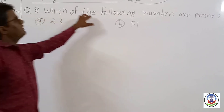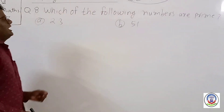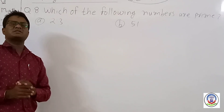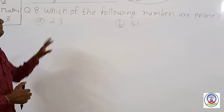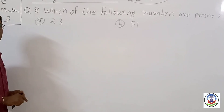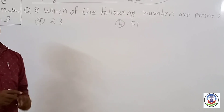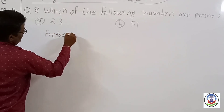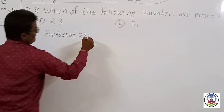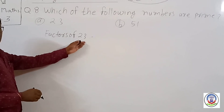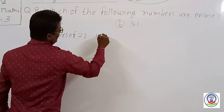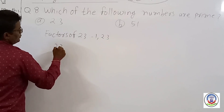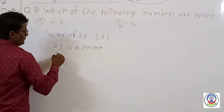Question 8: Which of the following numbers are prime? In question 8, we check each number accordingly. A prime number has only two factors — one and the number itself. For part a, the factors of 23 are only 1 and 23. So it has only two factors, and therefore 23 is a prime number.